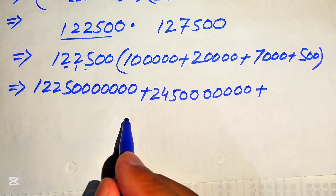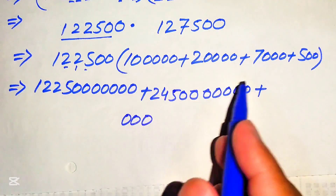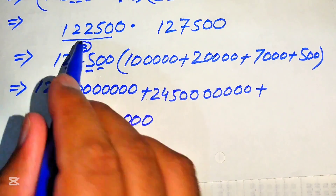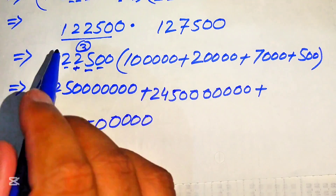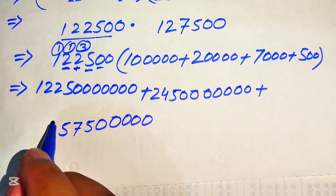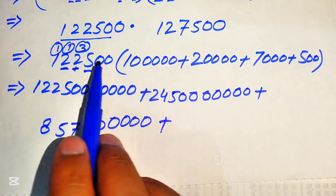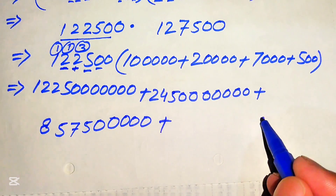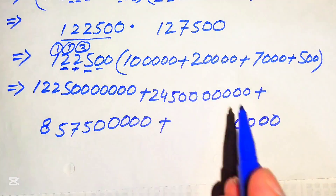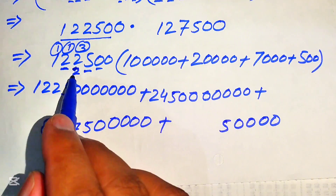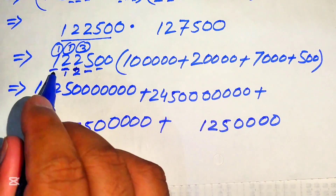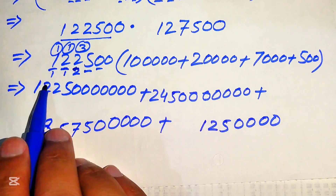Multiplying by 7,000: place 3 zeros, then multiply 7 times: 7 times 0 is 0, 7 times 0 is 0, 7 times 5 is 35 (write 5 carry 3), 7 times 2 is 14 plus 3 is 17 (write 7 carry 1), 7 times 2 is 14 plus 1 is 15 (write 5 carry 1), 7 times 1 is 7 plus 1 is 8. Then for 500: place 2 zeros, multiply by 5: 5 times 0 is 0, 5 times 0 is 0, 5 times 5 is 25 (write 5 carry 2), 5 times 2 is 10 plus 2 is 12 (write 2 carry 1), 5 times 2 is 10 plus 1 is 11 (write 1 carry 1), 5 times 1 is 5 plus 1 is 6.